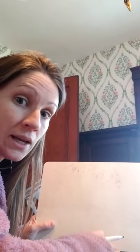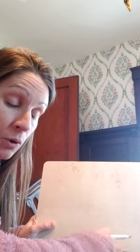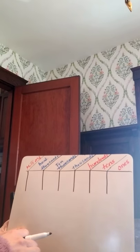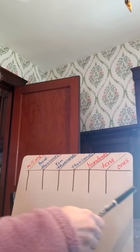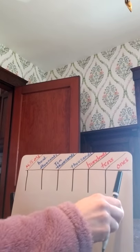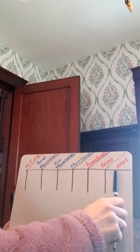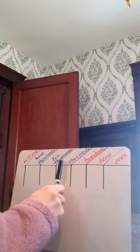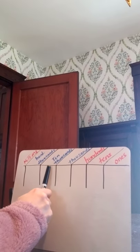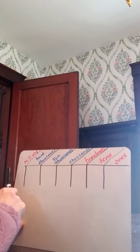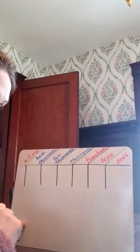Let's talk about expanded form. For expanded form, I want to look over here at my place value chart. I have ones, tens, hundreds, thousands, ten thousands, hundred thousands, all the way up to millions.